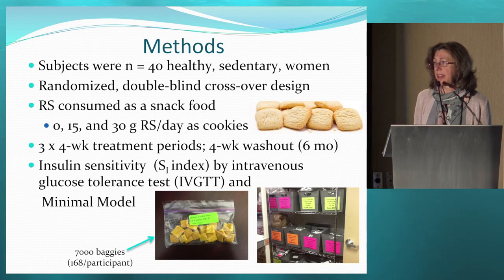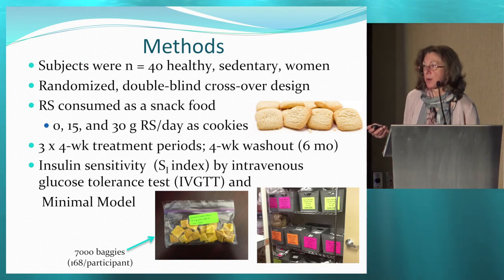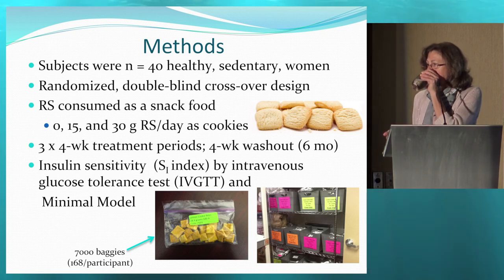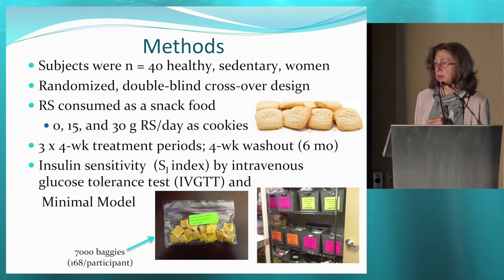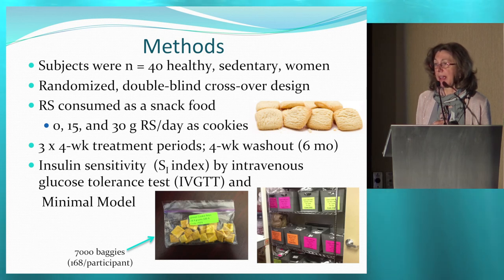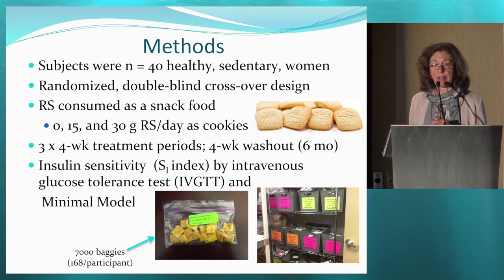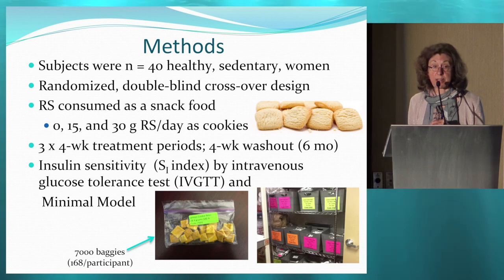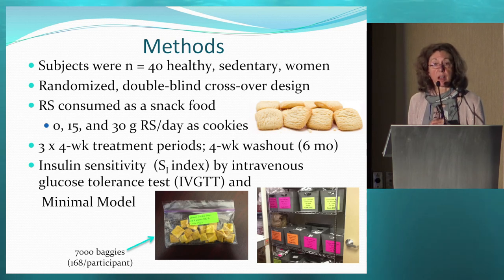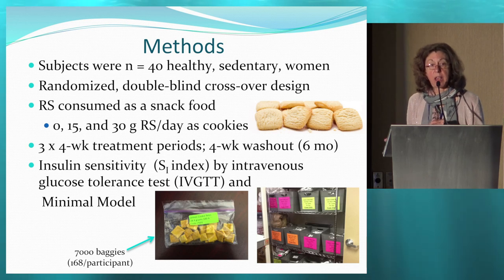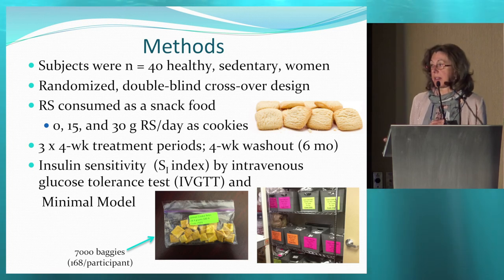Subjects were 40 healthy, sedentary women randomized to a double-blind crossover study design. The resistant starch was consumed as a snack food — cookies — at three doses: 0, 15, and 30 grams of resistant starch per day. All women consumed all doses in four-week treatment arms with a four-week washout in between. Any one woman could be in the study for up to six months. They underwent an insulin sensitivity test using the intravenous glucose tolerance test at the end of each treatment arm. We did have a number of women drop out, which ended up being one of the study's limitations.